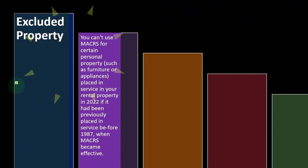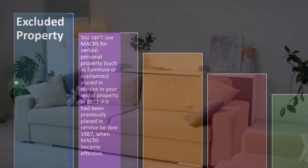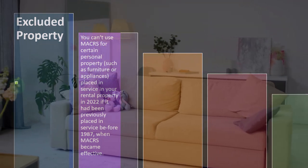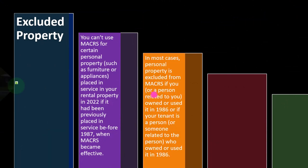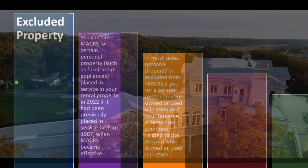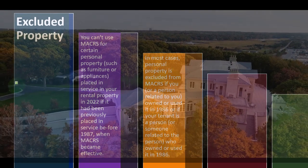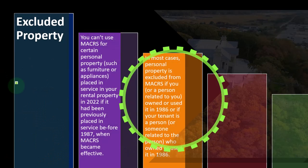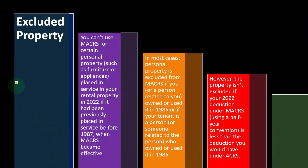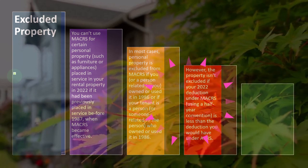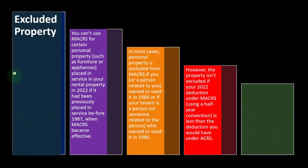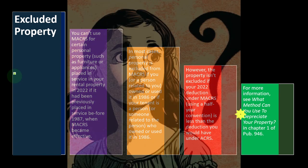Excluded property: you cannot use MACRS for certain personal property — such as furniture or appliances placed in your rental property in 2022 — if it had been previously placed in service before 1987, when MACRS became effective. In most cases, personal property is excluded from MACRS if you or a related person owned or used it in 1986, or if your tenant is related to a person who owned or used it in 1986. For more information, see Publication 946, chapter one.